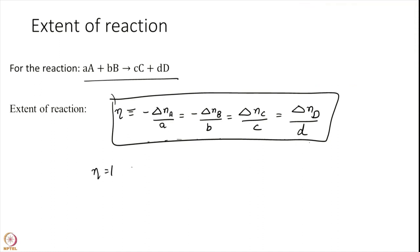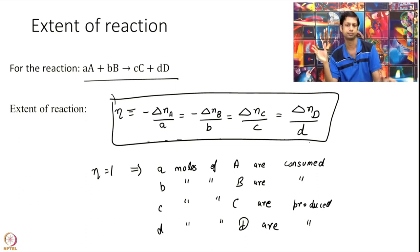eta equal to 1 implies a moles of A are consumed, b moles of B are consumed, c moles of C are produced. So it is an easy way to think about it. So we quantify it in this number, a dimensionless number.